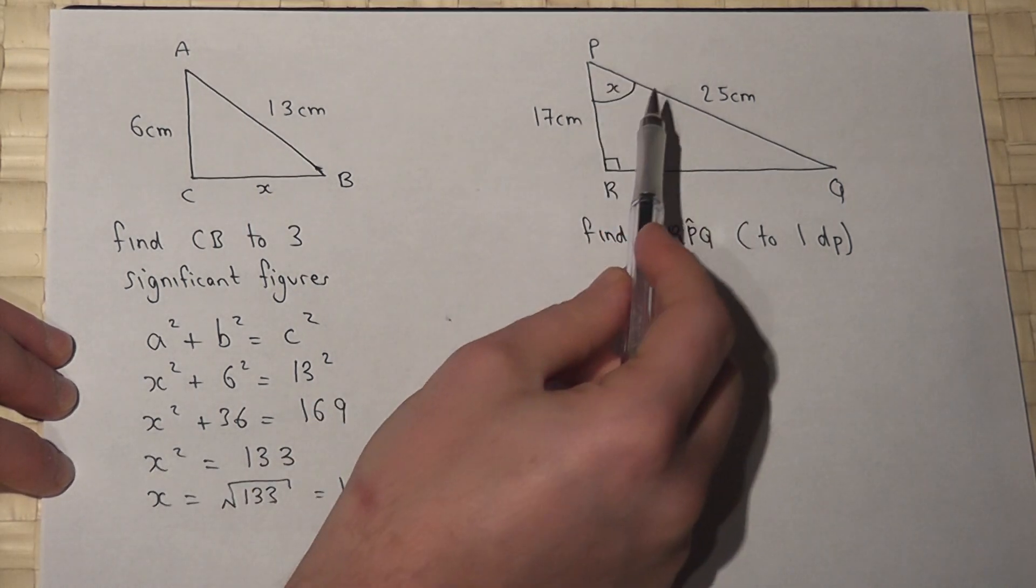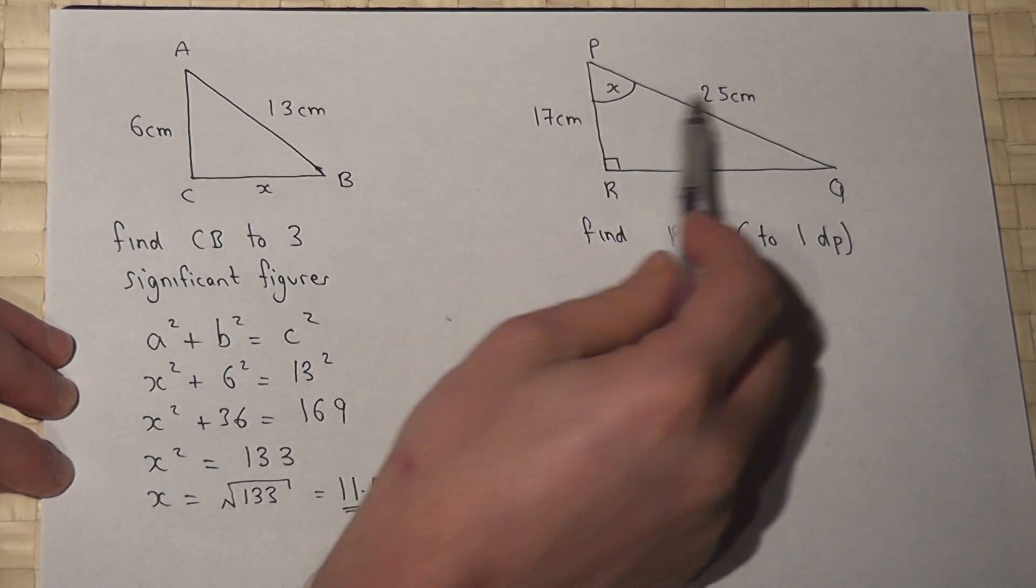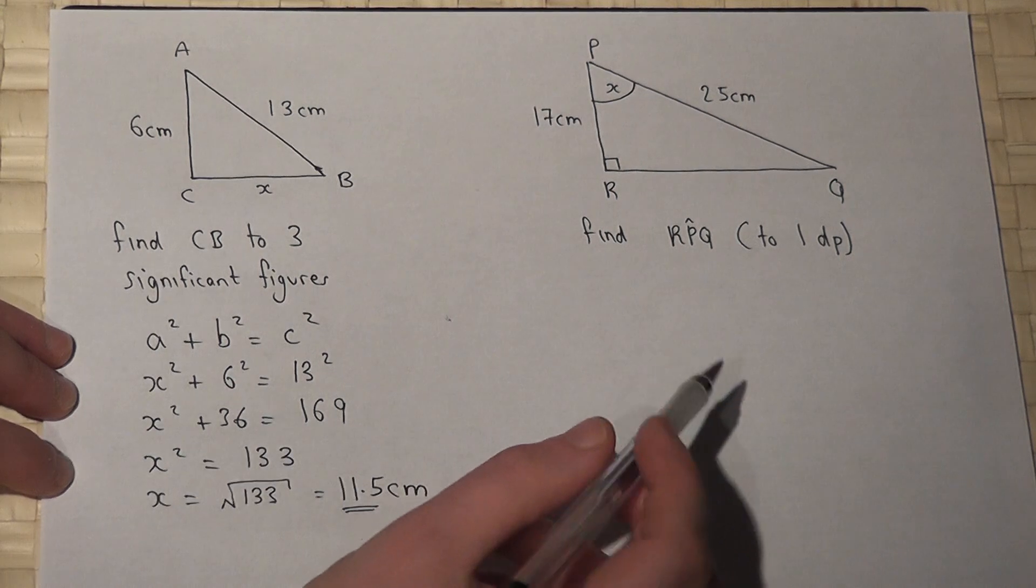Now, if we have a right angle, two sides and want an angle, then this is SOHCAHTOA.